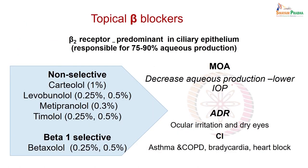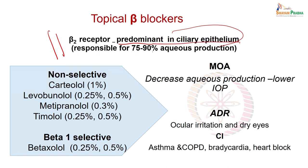The beta blocking agents used in glaucoma are those which can be given by topical application — direct instillation into the eye. Beta-2 receptors are predominant in the ciliary epithelium, which secretes aqueous humor, and the ciliary epithelium is responsible for 75 to 90% of aqueous production.